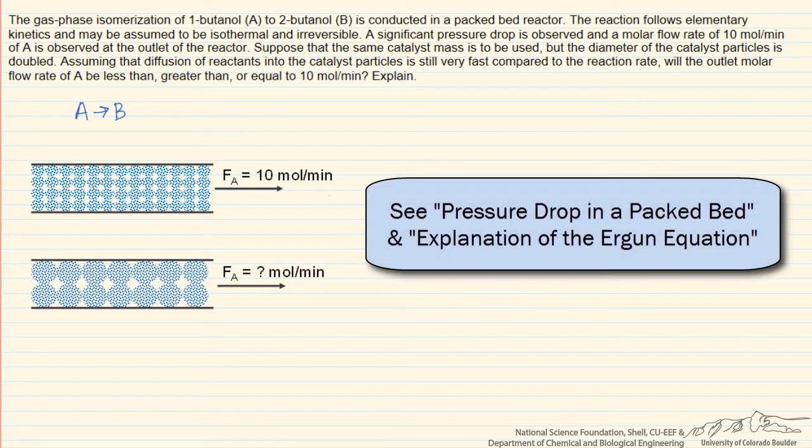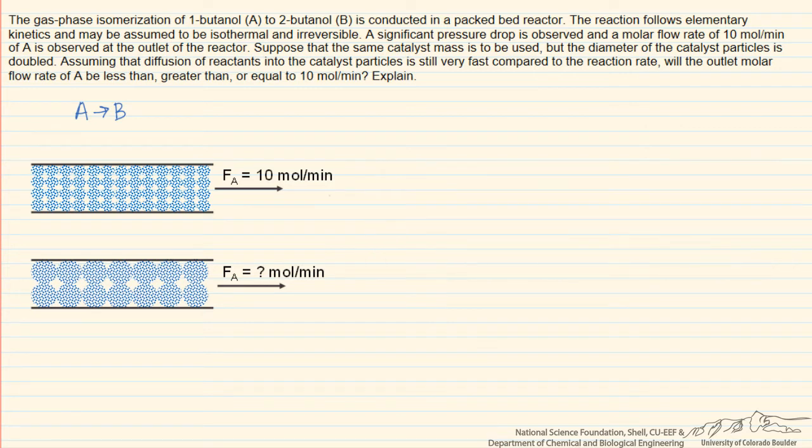Based on the Ergun equation, as we increase the size of the catalyst spheres, so this is often described as the diameter of the particle capital D sub P, as that goes up, then we expect the rate of pressure drop with respect to catalyst mass to go down. We expect that the rate with which the pressure drops is going to go down as we have these larger spheres inside the reactor.